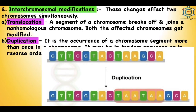The second type of interchromosomal modification is duplication — the occurrence of a chromosome segment more than once in a chromosome, either in tandem sequence or reverse order. It may occur when homologous chromosomes exchange unequal segments during crossing over in meiosis, causing one chromosome to suffer deletion while its homolog acquires an additional set of genes. A fragment may also separate and join a homologous chromosome. During synapsis between a duplicated and a normal chromosome, the former forms a loop at the site of duplication.